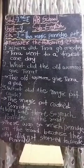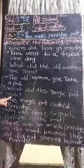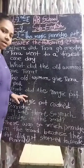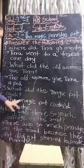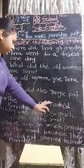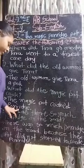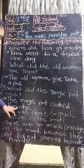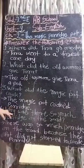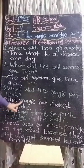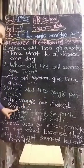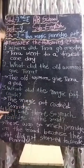Third one: What did the magic pot cook? (Magic pot ne kya banaya?) Answer: The magic pot cooked porridge — porridge yani khir.